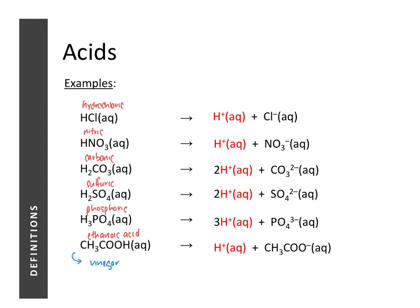There is a slight difference among these acids. One unit of hydrochloric acid or nitric acid produces one unit of hydrogen ions. However, one unit of carbonic acid produces two units of hydrogen ions. One unit of phosphoric acid produces three units of hydrogen ions.